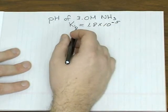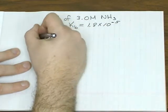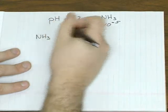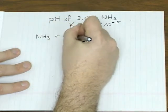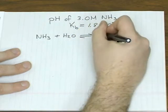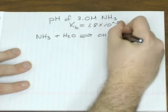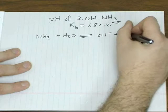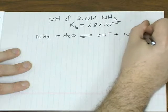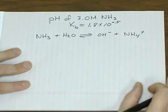So remember, the base association constant, and that comes from the equilibrium where your base reacts with water to give you hydroxide, because it's a base, and the conjugate of that base.